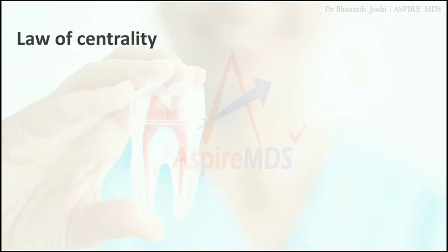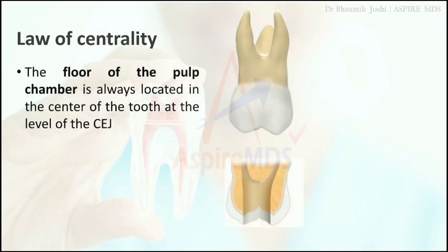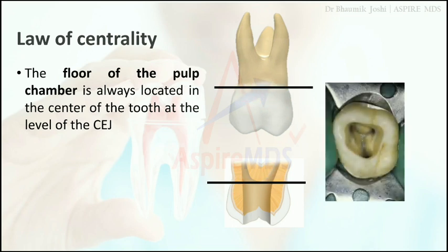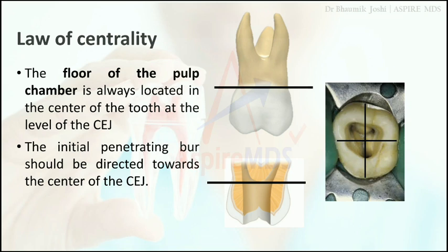First is the law of centrality. The law of centrality helps us in locating the floor of the pulp chamber. According to this law, the floor of the pulp chamber lies at the level of the CEJ, and it will be in the center of the tooth. So the initial penetration of the bur should be directed towards the center of the CEJ level, not at the center of the crown.